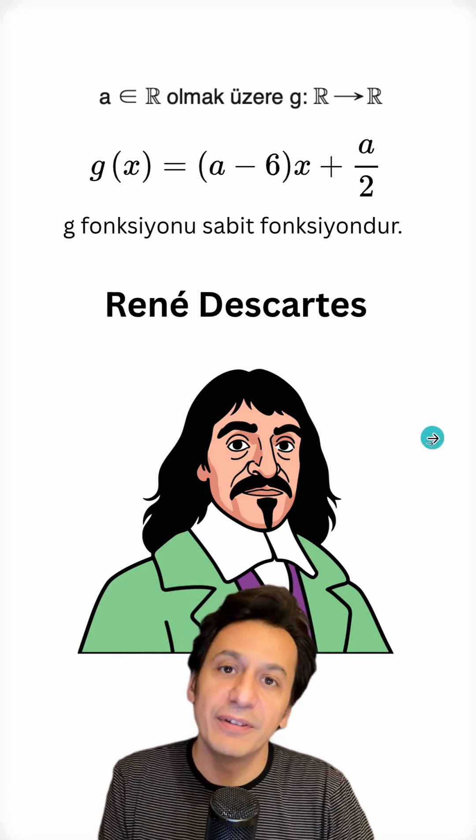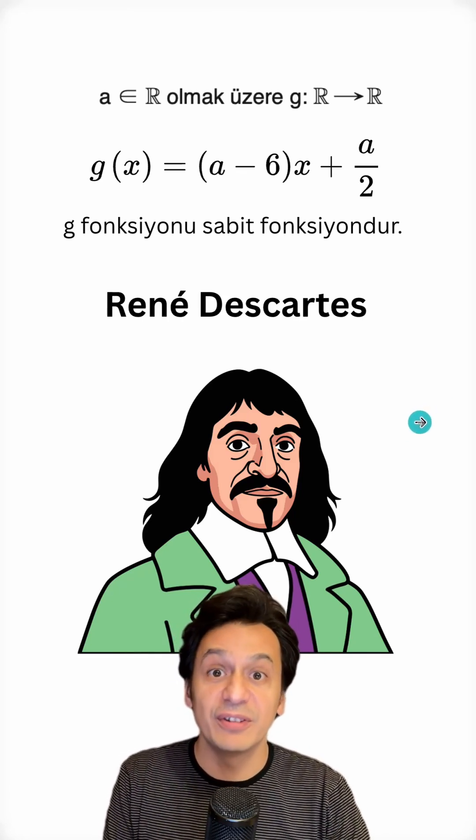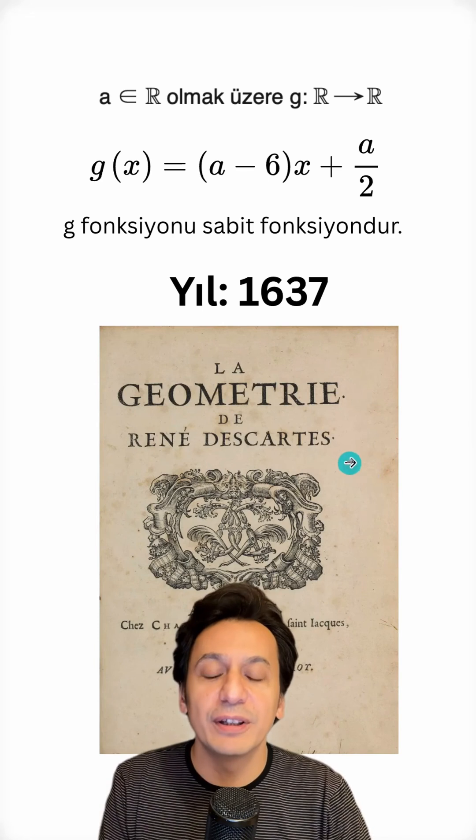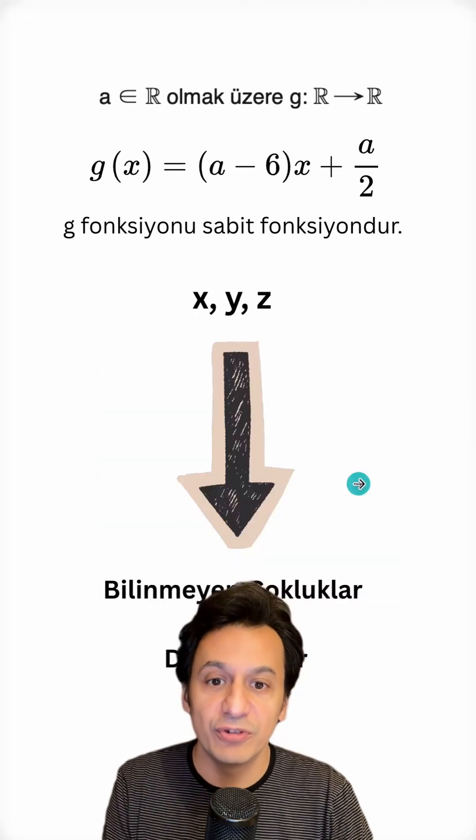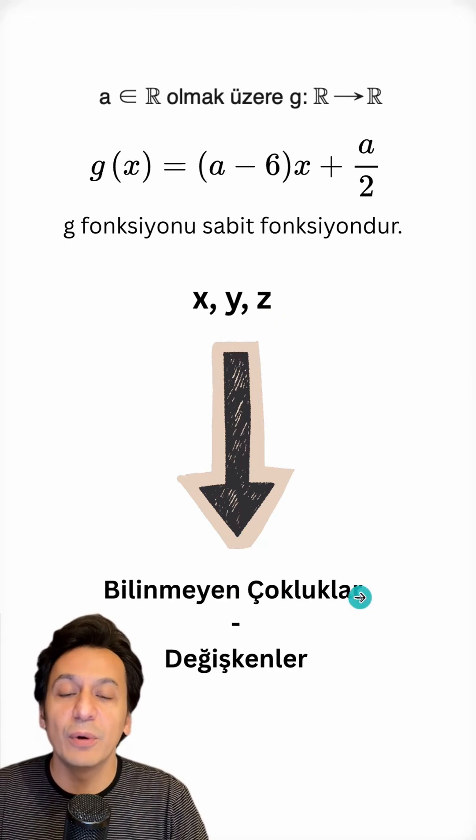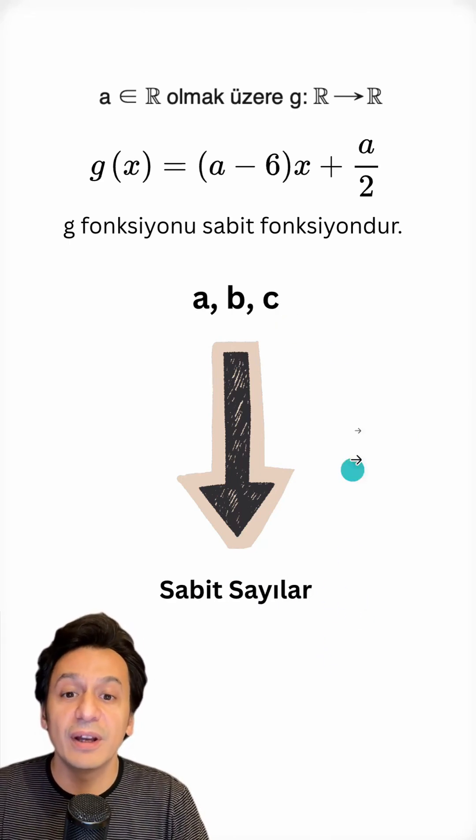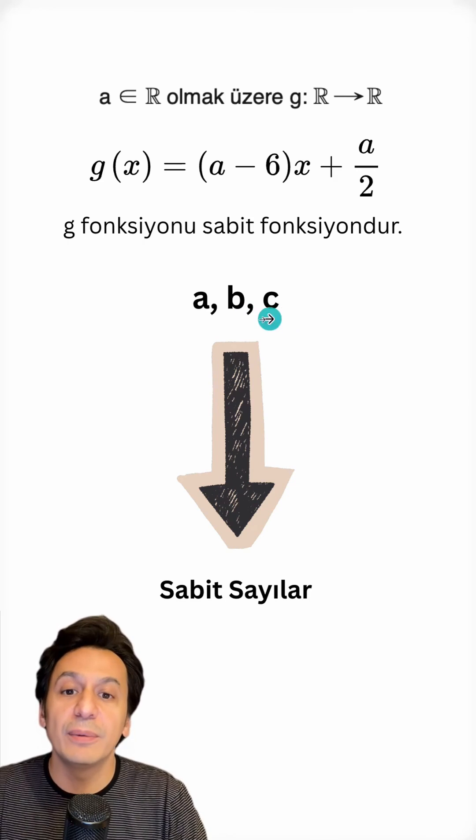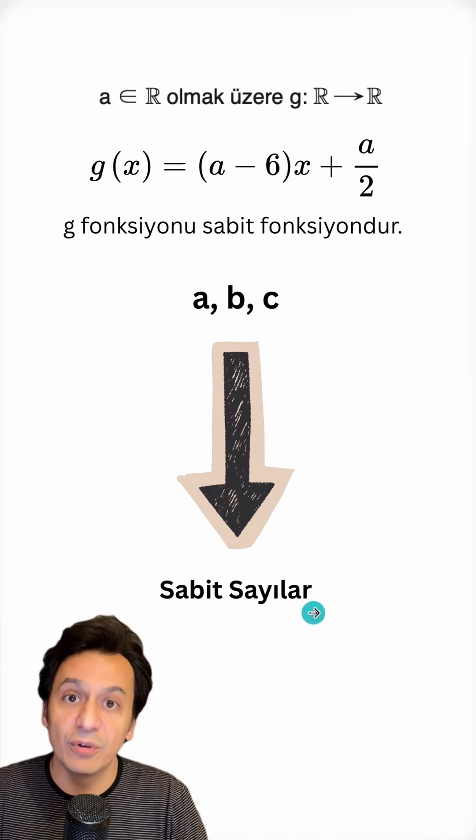Rene Descartes, the 17th century philosopher and mathematician, says in his book Geometry, written in 1637, I will use the letters X, Y, and Z, which come at the end of the alphabet, for unknown quantities or variables, and I will use the first letters of the alphabet, A, B, and C, for constant numbers.